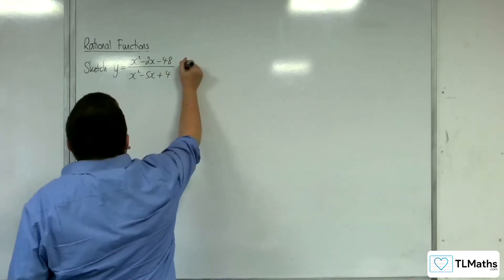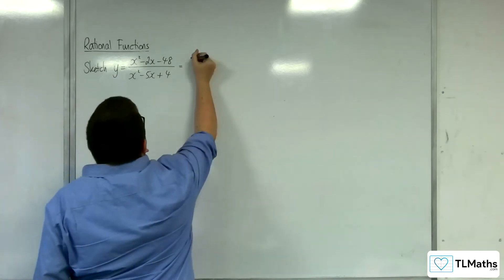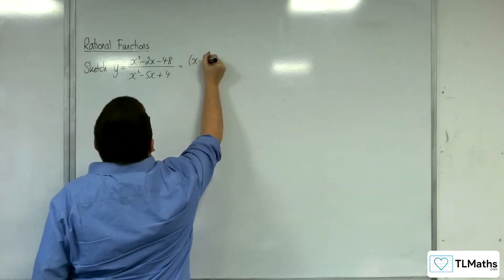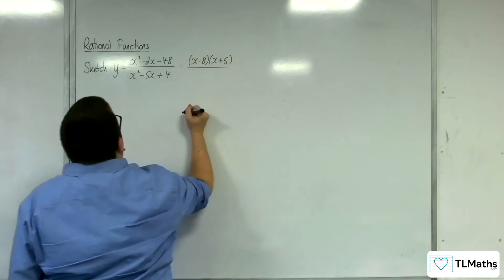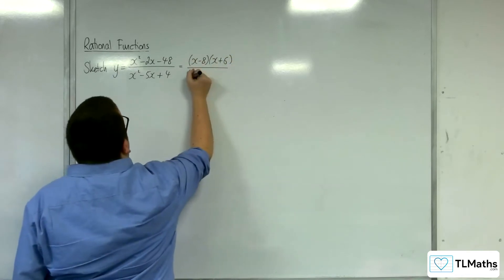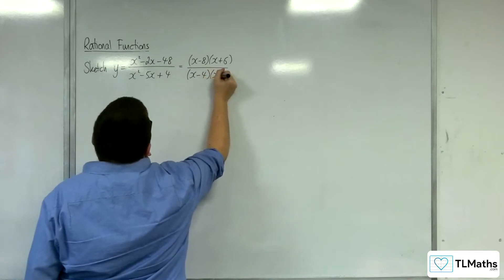First thing to do, spot whether you can factorise the numerator and denominator. So this would be x take away 8, x plus 6, and in the denominator we would have x take away 4, x take away 1.